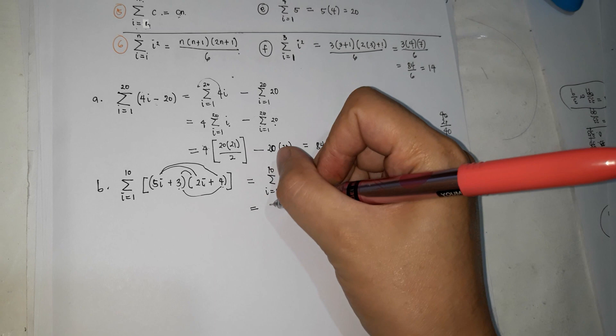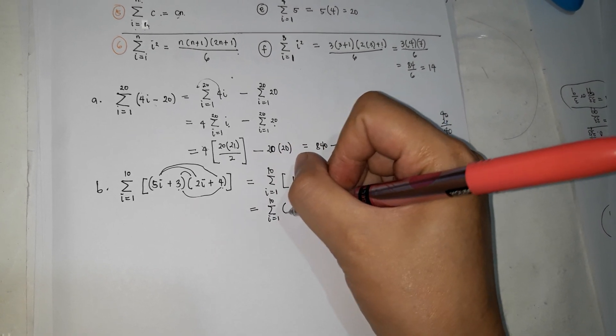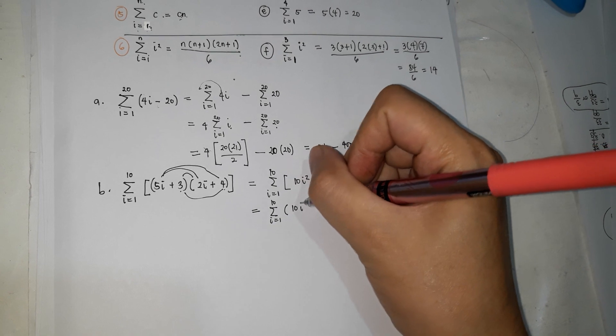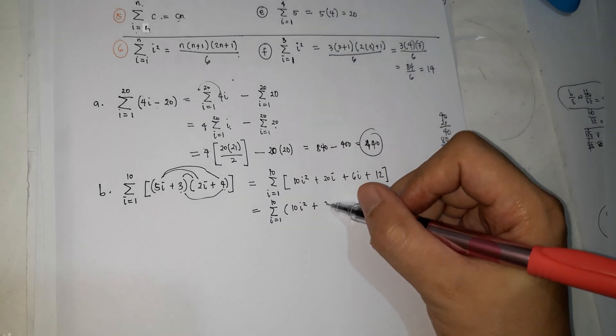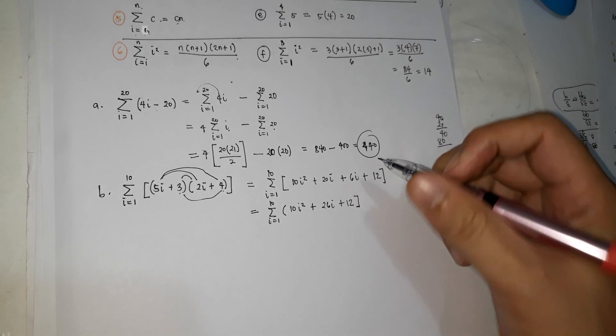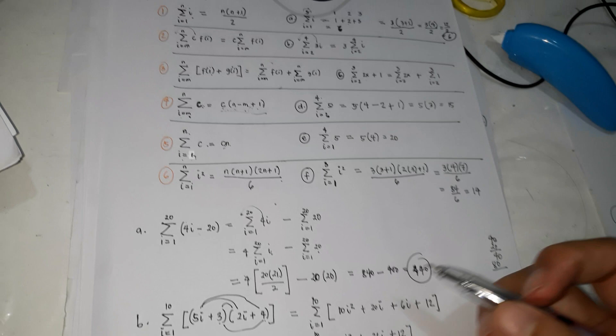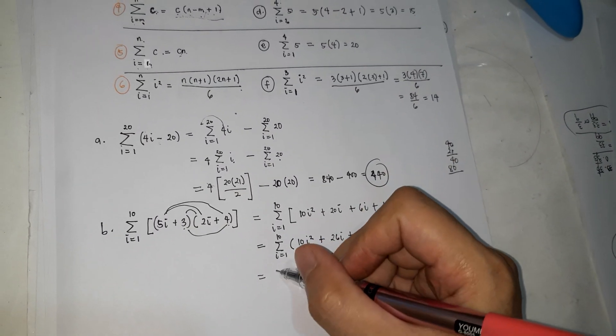Pwede mo pang i-simplify. i is equal to 1, 10. Simplify mo yan. i squared, plus 20, plus 6, it's 26i, plus 12. We're going to have the distributive property, yung distribute. Ito siya. So i-distribute mo yung summation.